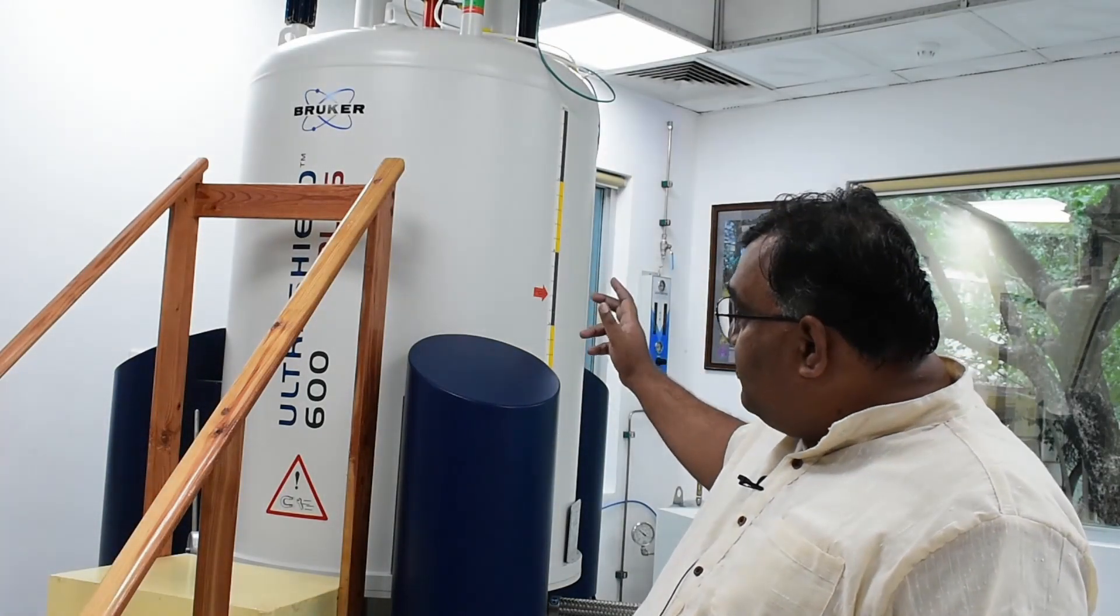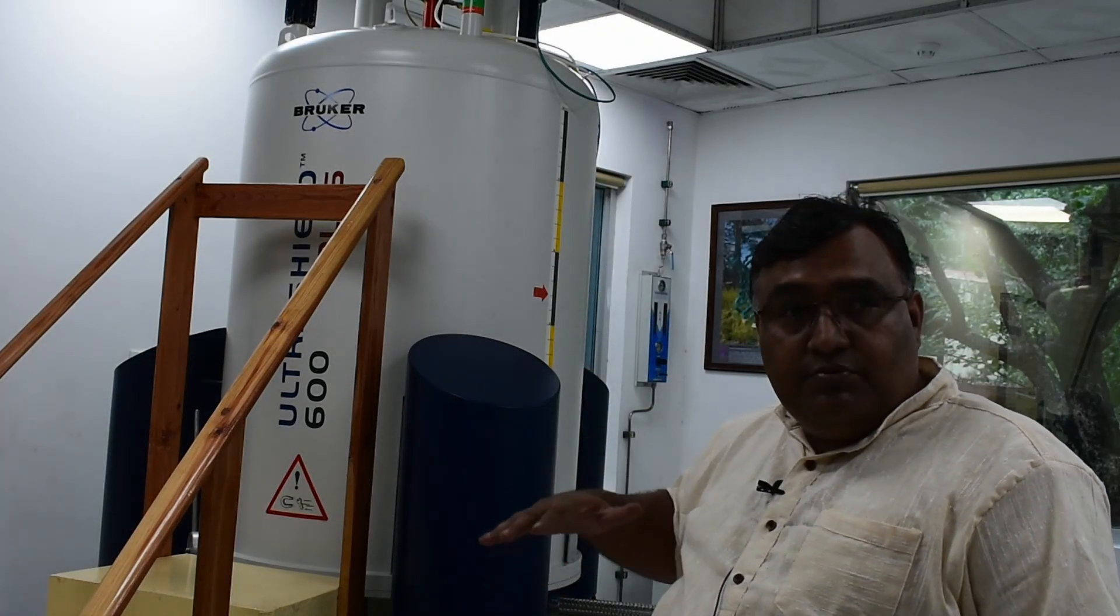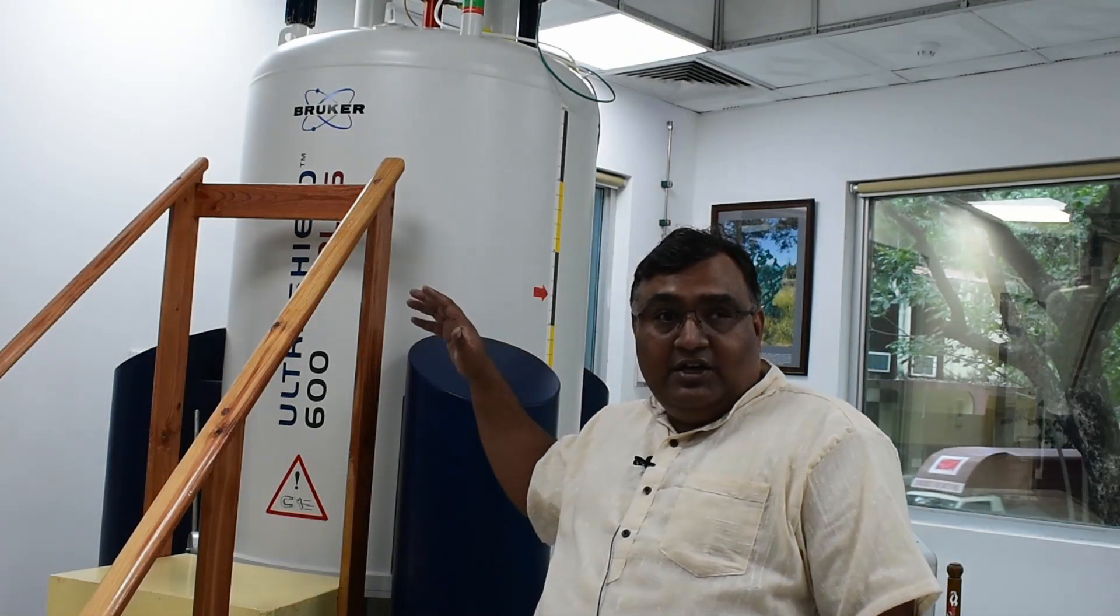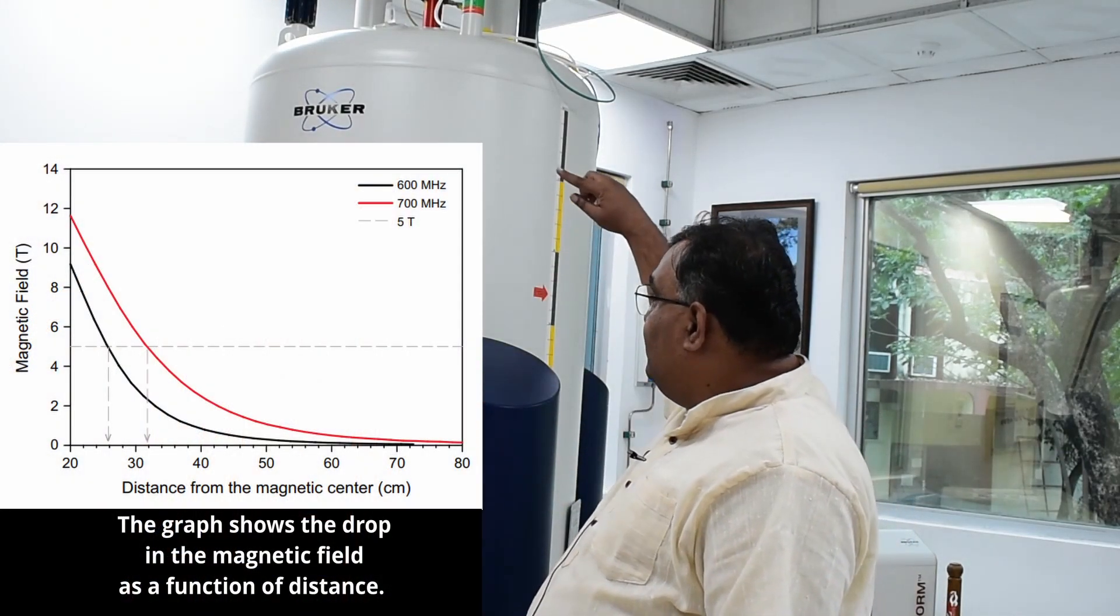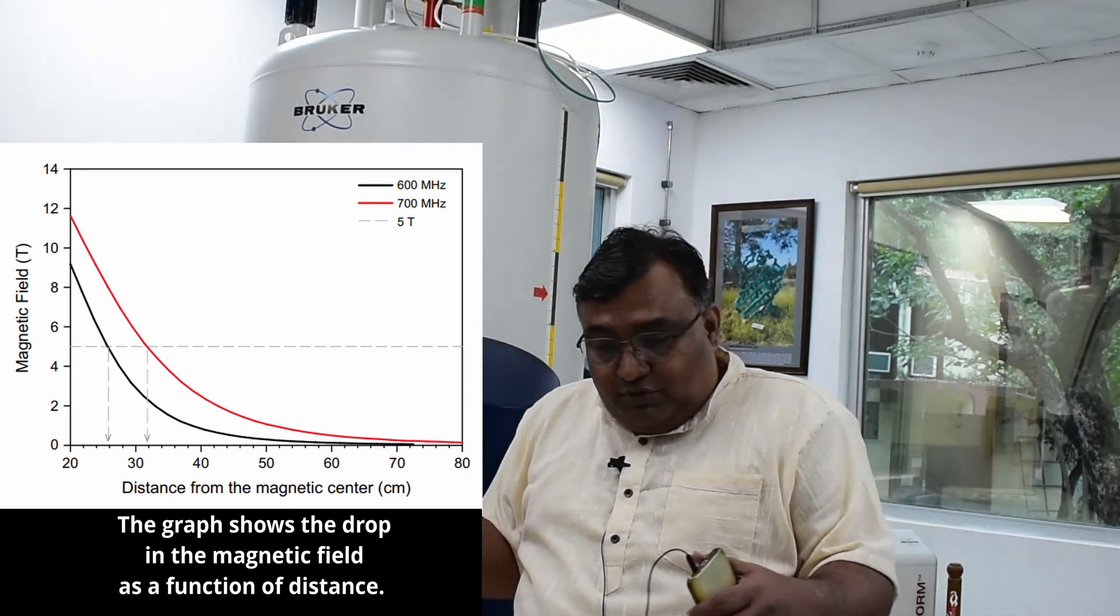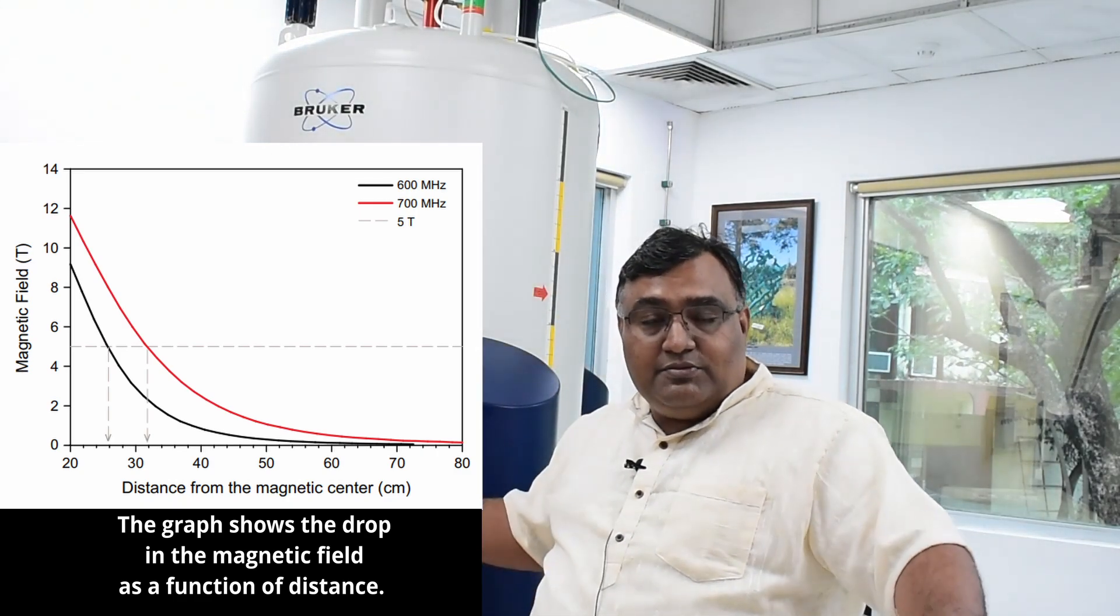Now the problem comes in that the fringe field of this magnet would be very high and I wouldn't be able to even stand here with this camera and a cell phone in my hand, had it not been ultra shielded or deshielded from the outer side. So there is an additional magnetic field that is created around this magnet from outside that essentially puts the fringe field to the legs of the magnet. And these are called as ultra shield magnets and that's why this magnet looks really big.